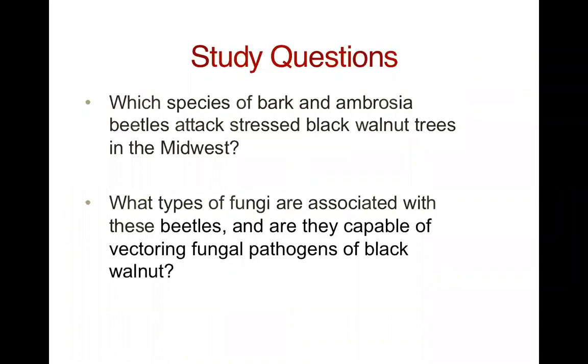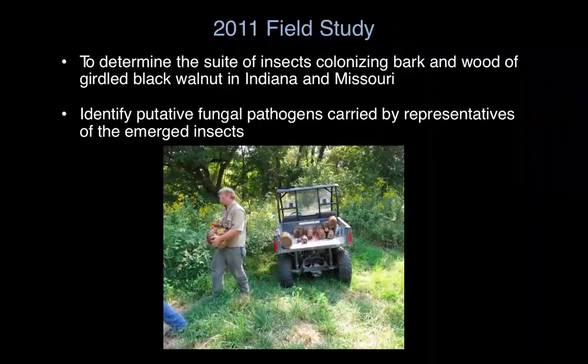Our study questions were: which species of bark and ambrosia beetles attack stressed black walnut in the Midwest? What types of fungi are associated with these beetles? And are they capable of vectoring fungal pathogens of black walnut? In collaboration with Sharon Reed and Jim English at the University of Missouri and Jenny Juzwick, a plant pathologist at the U.S. Forest Service in Minnesota, we conducted a field study to determine the suite of insects colonizing the bark and wood of girdled black walnut in Indiana and Missouri.